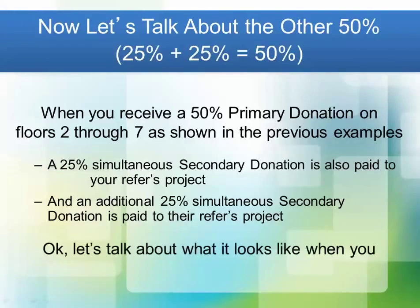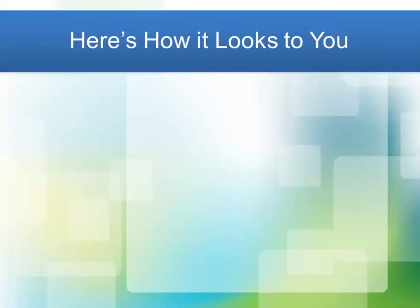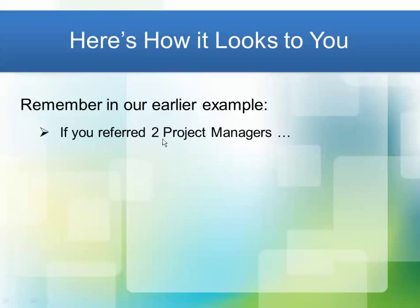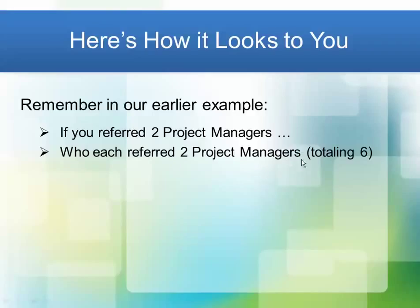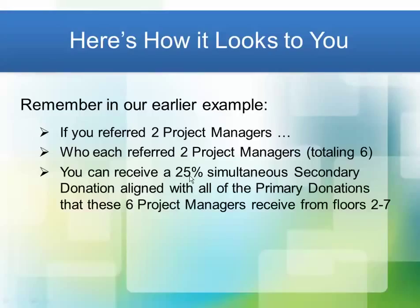Here's how it looks to you. Remember in our earlier example: if you referred two project managers who each referred two project managers, that totals six — you started with two, they each referred two which makes four, plus your original two, equaling six project managers in your community. You can receive a 25% simultaneous secondary donation aligned with all the primary donations that these six project managers receive from floors two through seven. When these six project managers receive those donations across all the stepping-up levels, you get a simultaneous 25% donation towards your project. It pays out through two generations.